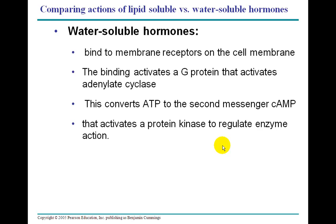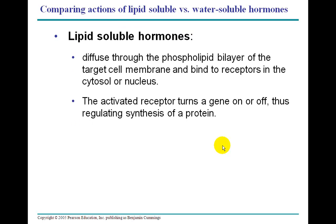A lipid-soluble hormone diffuses right through the phospholipid bilayer of the target cell membrane and binds to receptors either in the cytoplasm or in the nucleus. The activated receptor then turns genes on or off, regulating the synthesis of a protein. My honors class needs to make sure they can do a compare and contrast question on this. Any questions, come see me tomorrow and we'll go through it again. Thank you.